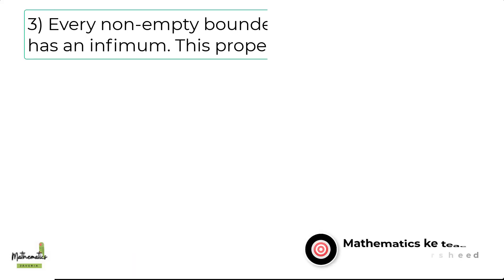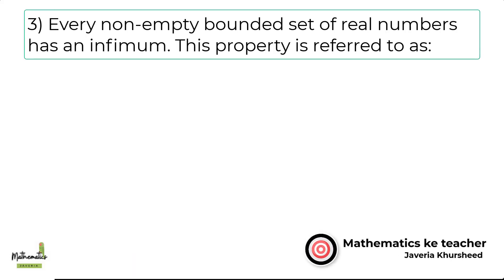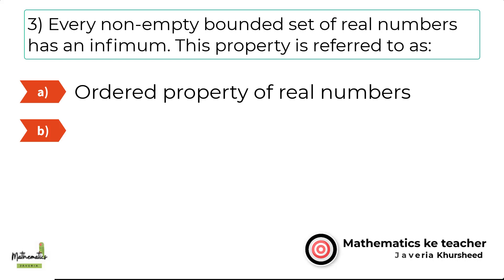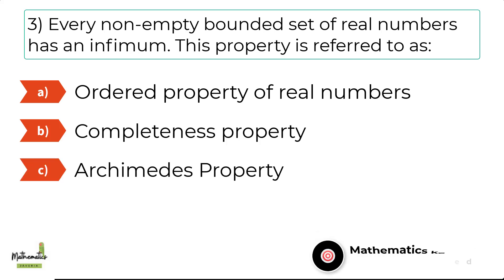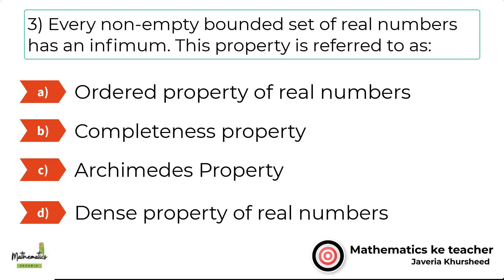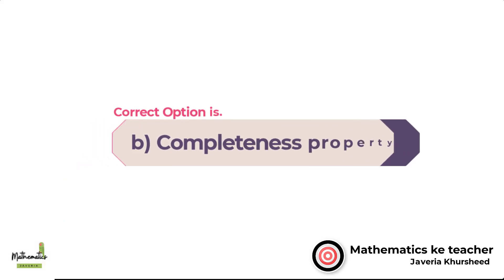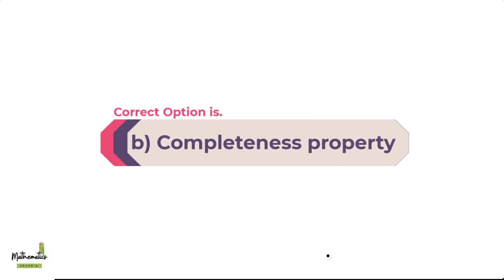Number 3. Every non-empty bounded set of real numbers has an infimum. This property is referred to as: A. Ordered property of real numbers. B. Completeness property. C. Archimedes property. D. Dense property of real numbers. The correct option is B. Completeness property.